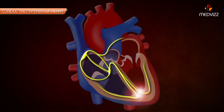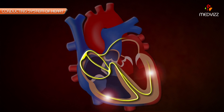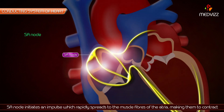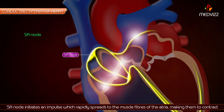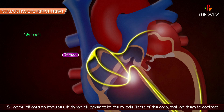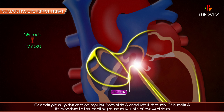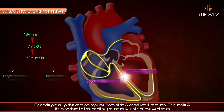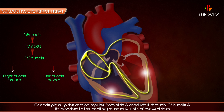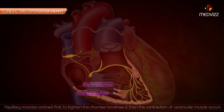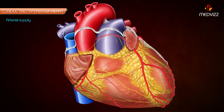The conducting system and mode of contraction of cardiac muscle is summarized as follows: the SA node, a spontaneous source of cardiac impulse, initiates an impulse which rapidly spreads to the muscles of the atria making them contract. The AV node picks up the cardiac impulse from the atria and conducts it through the atrioventricular bundle and its branches to the papillary muscles and the walls of the ventricles. The papillary muscles contract first to tighten the chordae tendineae, and then contraction of the ventricular muscle occurs.